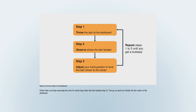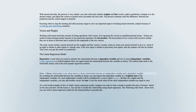Notice that you keep assessing the error by observing where the dart landed. You go on until you finally hit the center of the dartboard. With neural networks, the process is very similar. You start with some random weights and bias vectors, make a prediction, compare it to the desired output, and adjust the vectors to predict more accurately the next time. The process continues until the difference between the prediction and the correct targets is minimal. Knowing when to stop the training and what accuracy target to set is an important aspect, mainly because of overfitting and underfitting scenarios.